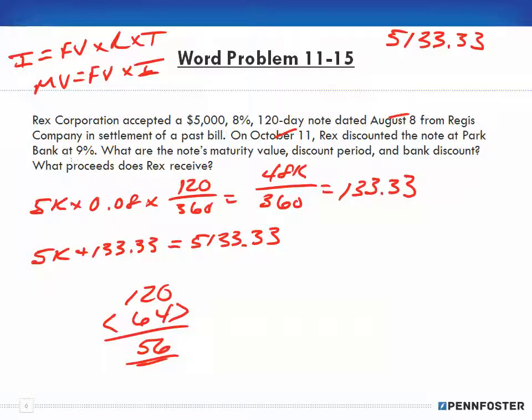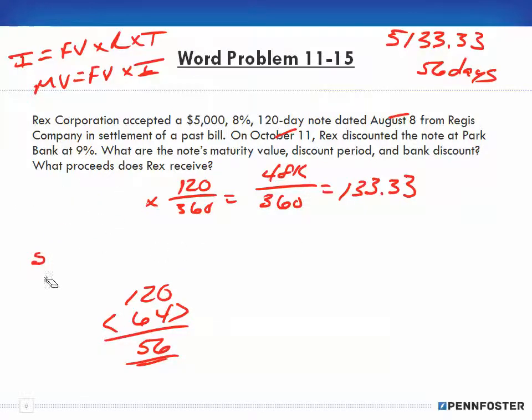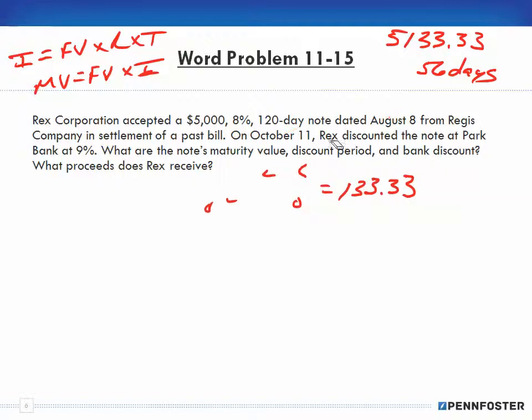So 56 days, that's the discount period. Notice that this is the exact same thing that we did in the previous one. It's the exact same procedure, there's nothing different. It's almost plug and play the numbers.